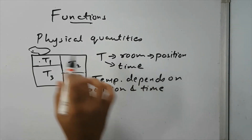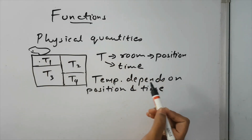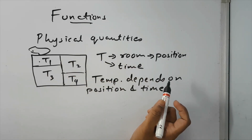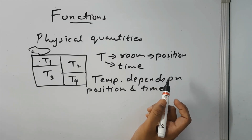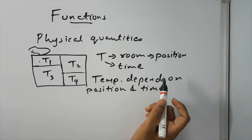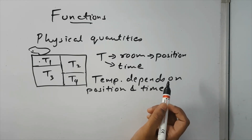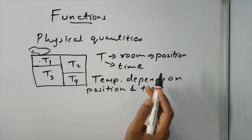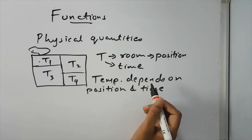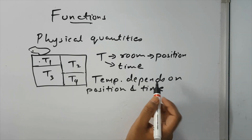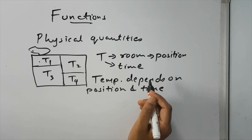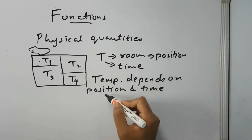So it depends on any place — position and time. If you look at a geographical scale, let's say India. If you go to the desert, the temperature is high. If you go to the Himalayas, the temperature is low. So the temperature depends on position.